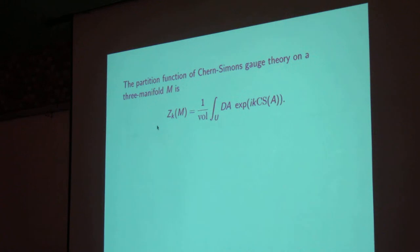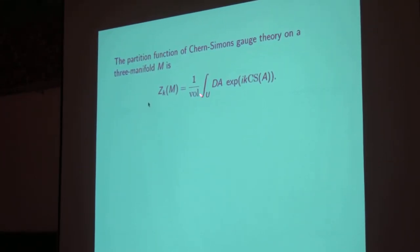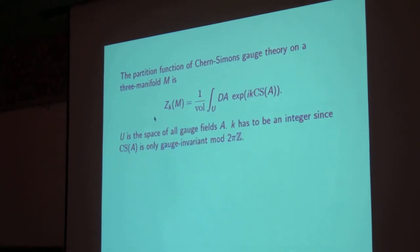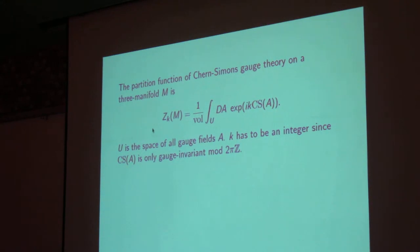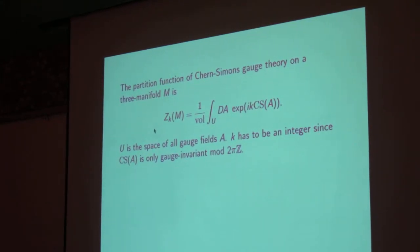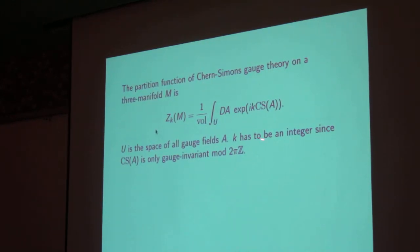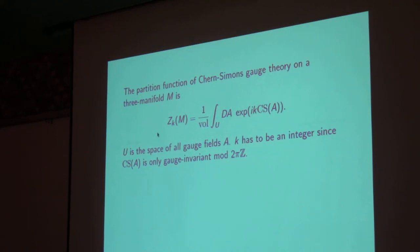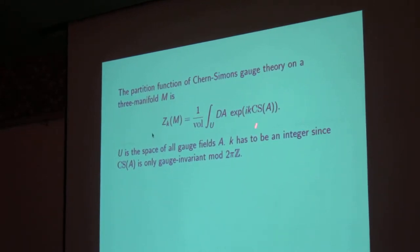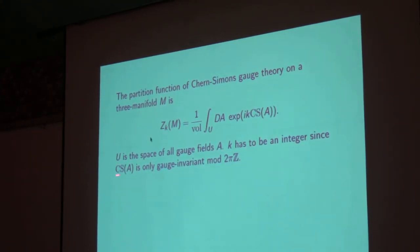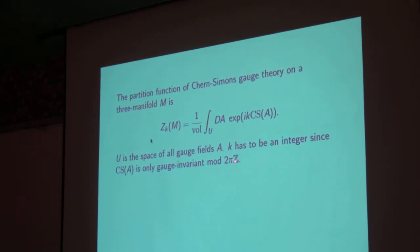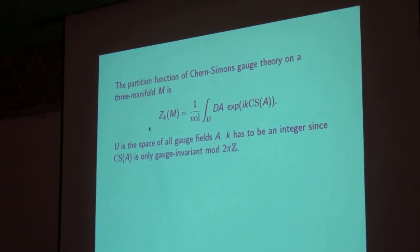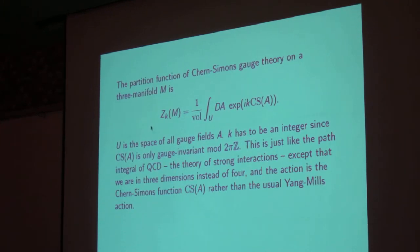So what would be called the partition function in quantum gauge theory is obtained by integrating over all connections, all gauge fields, dividing by the volume of the gauge group, and what you integrate is the exponential of the action. Now if we were doing quantum electrodynamics, then the action would be something else. It would be the Maxwell action, something like E squared minus B squared, and what it would multiply would be basically one over the fine structure constant. But here, instead of the Maxwell action, we're using the Chern-Simons function, and what it multiplies has to be i times an integer. And the reason for that is that the Chern-Simons function is only gauge-invariant modulo 2π times an integer. So to make this exponential gauge-invariant, we have to exponentially multiply by i, the square root of minus one, times an integer.